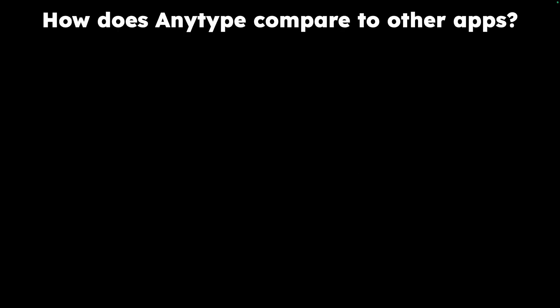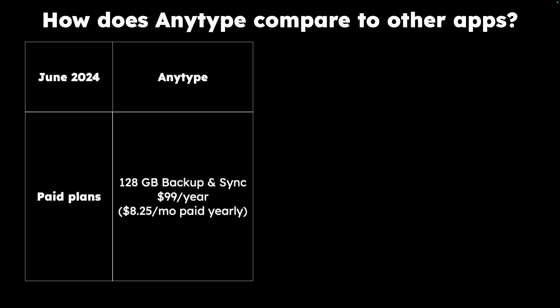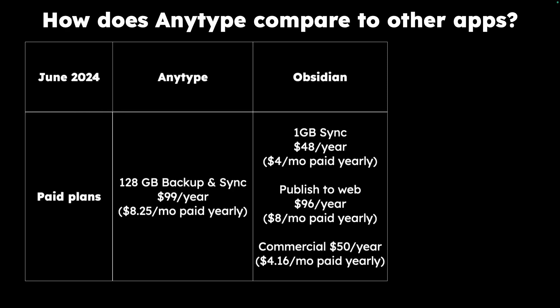How does AnyType compare to other apps? I'm going to do a quick comparison to Notion and Obsidian, as of June 2024. AnyType's lowest paid plan right now is 128 gigabytes for $99 a year. Obsidian starts with a one gigabyte sync at $48 per year.